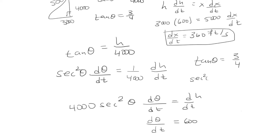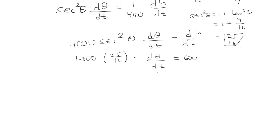Also secant squared is 1 plus tangent squared, so tangent squared is 9/16, so that gives us 25/16 as secant squared. We'll plug that in here: 4,000 times 25/16 times d(theta)/dt equals 600. With some algebra, we get d(theta)/dt is equal to 0.096 radians per second.